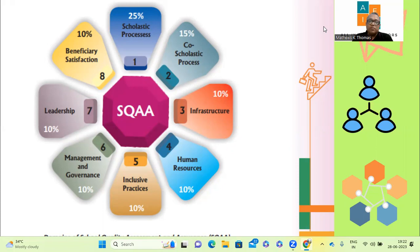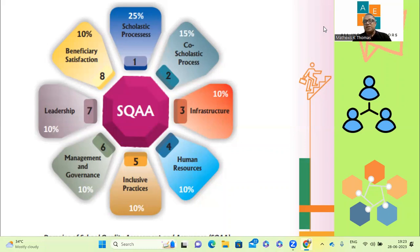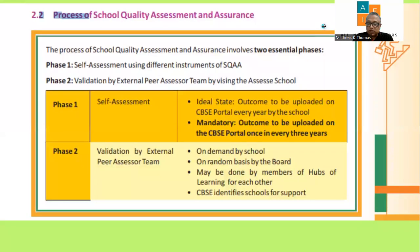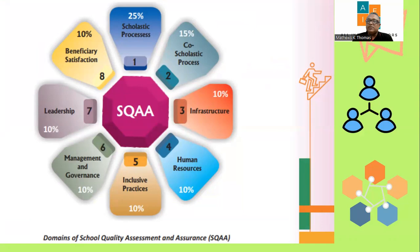Domain four is human resources — all people involved: teachers, office staff, non-teaching staff, alumni, friends of schools, benefactors, parent-teacher associations. Every human being involved in the functioning of a school is part of human resources. Domain five is inclusive practices, which is very important as per NEP. If a child has special needs, we must incorporate systems to include that child in the normal system of learning.